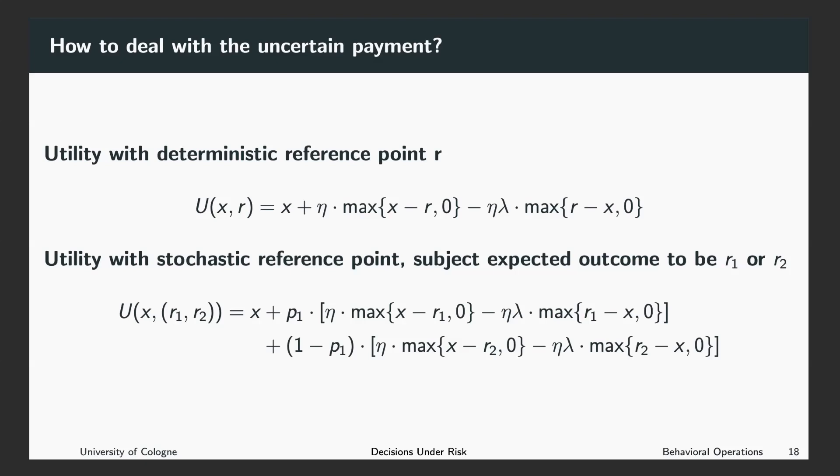Instead, if r₁ is larger than x, so you get less than you expected the payment, the utility, or the psychological utility, is given by minus η times λ times r₁ minus x.